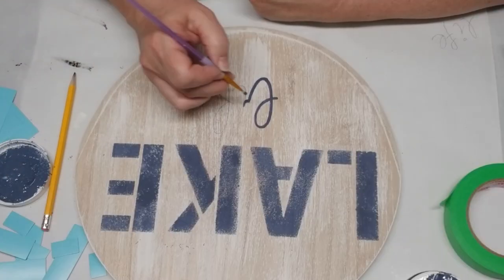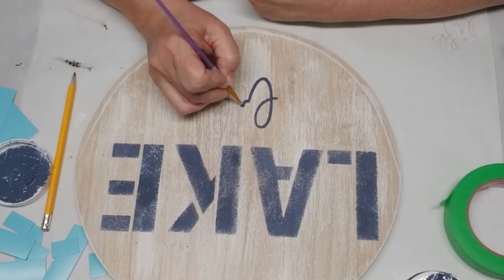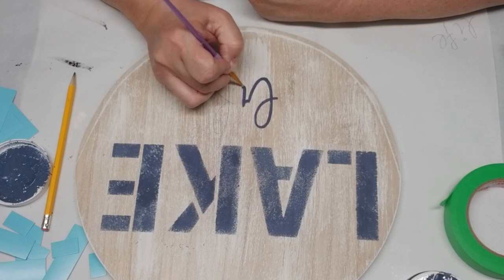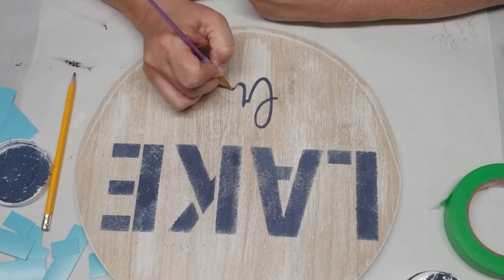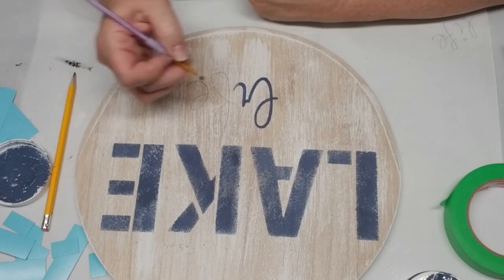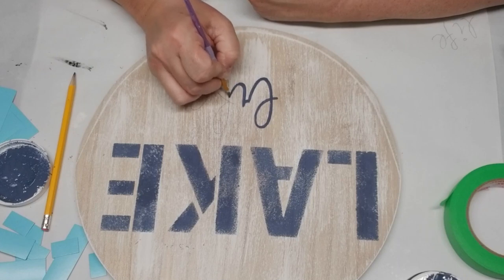Underneath the word 'lake' I'm putting 'life,' and I just wanted it to be smaller and in a little bit of a different font style, so I just went ahead and did some free-handing with pencil. Now I'm just using the same coastal blue and a small paint brush to trace it out.